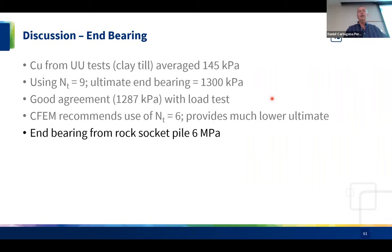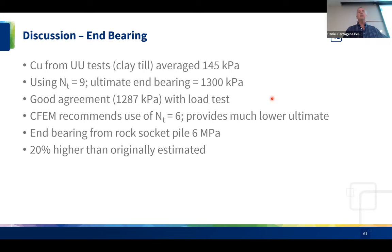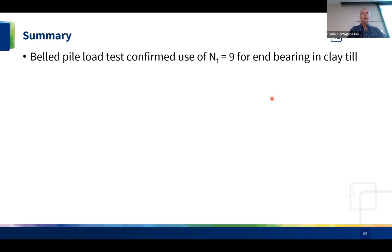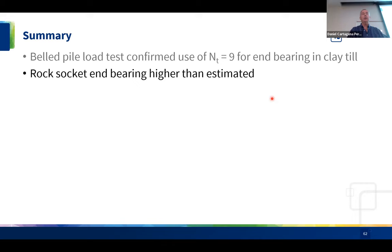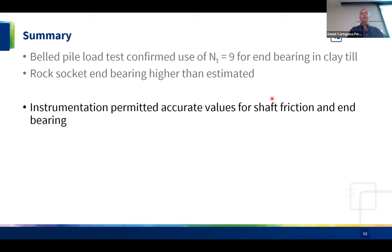For the rock socket end bearing, we originally estimated about 5 MPa but the load test demonstrated we achieved closer to 6 MPa — 20% higher than originally estimated. This is an additional advantage of load testing beyond the 50% increase in resistance factor: if you achieve higher shaft friction or end bearing values, those can be incorporated into design too, making the foundation even more cost effective. In summary, the bell pile test confirmed Nt = 9 for bell piles in clay till, and the rock socket end bearing was about 20% higher than predicted.